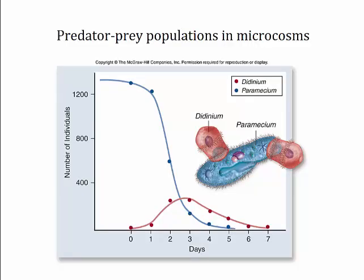Predation can alter the size of prey populations and vice versa. In microcosm experiments with didinium and paramecium, the didinium ate paramecia until there were none left. Then the didinium died out because there was no more food.